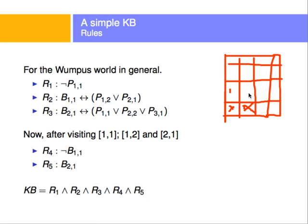If I feel a breeze at (2,1), then: breeze at (2,1) if and only if there's a pit at (1,1), or a pit at (2,2), or a pit at (3,1), or any combination of these. These are simple rules for the first few squares of the grid.